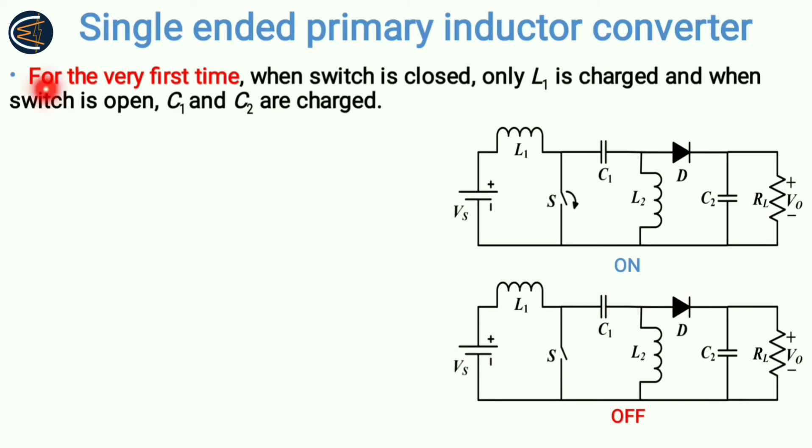Before going further, you need to know that for the very first time when switch is closed, only L1 is charged. When the switch is closed for the very first time, only L1 will be charged because rest of the portions have no power flow. And when switch is open, C1 and C2 are charged.